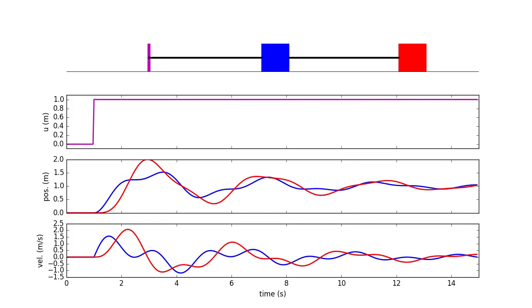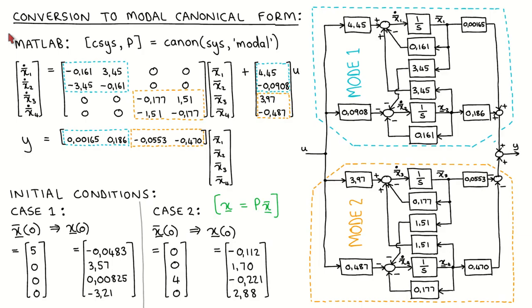This is only a fourth-order system, yet the response looks complex and it is not immediately clear how to understand it. Let's now convert the system to the modal canonical form and excite only one mode at a time.